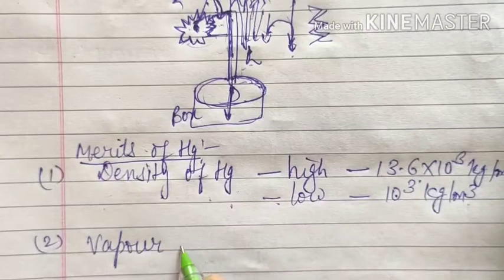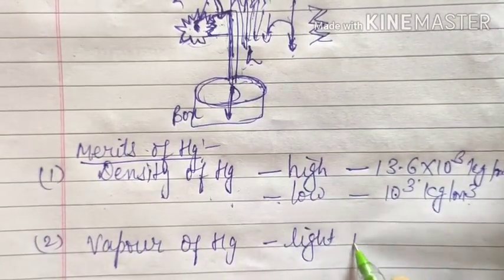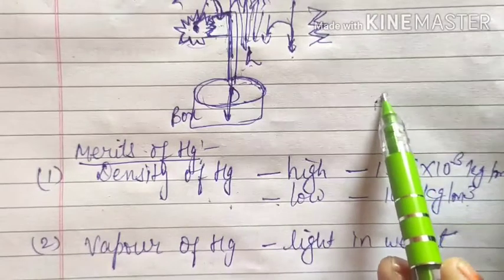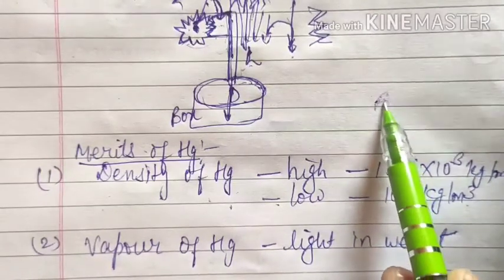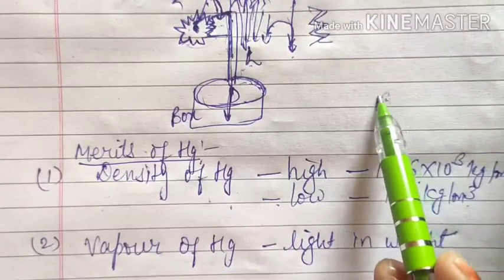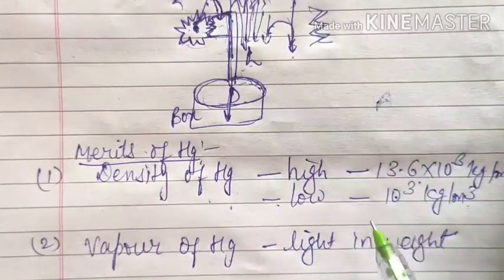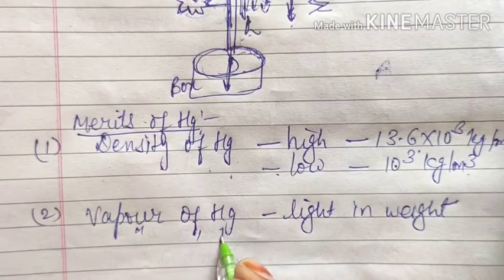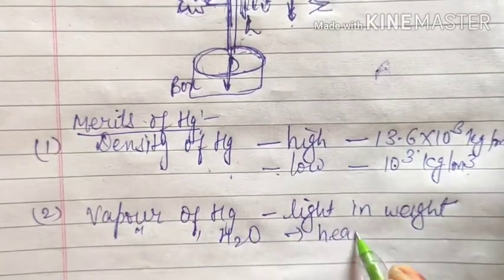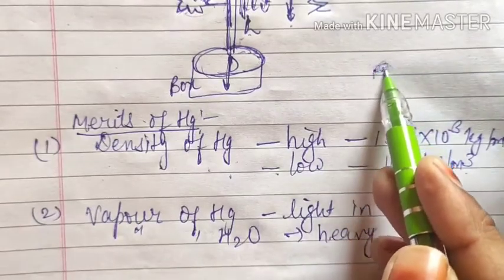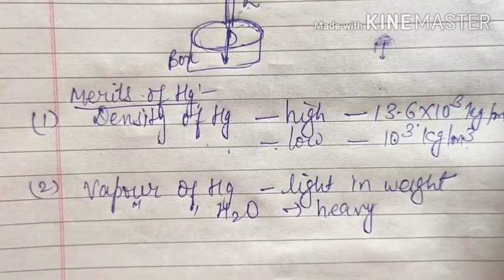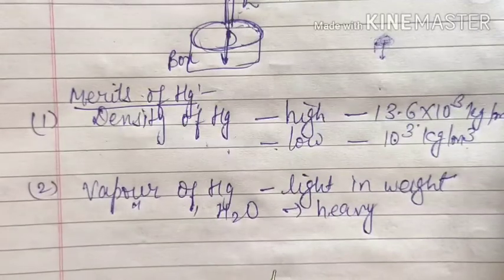The second reason is that the vapor of mercury is very light in weight. If due to an increase in temperature, vapor of mercury is created in the vacuum portion of the tube (known as Torricelli vacuum), it will not affect the reading by a large amount. But if you use water vapor, it is heavier, and a heavy vapor inside would exert pressure on the liquid and affect the reading.